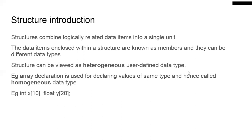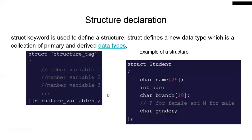Structures can be viewed as a heterogeneous user-defined data type. By contrast, an array is a homogeneous data type — it can store only one data type. For example, float y[20] means all values in y can hold only floating data types. In a structure, you can store different data types: a character array (string), an integer for age, a character array for branch, and a single character for gender.